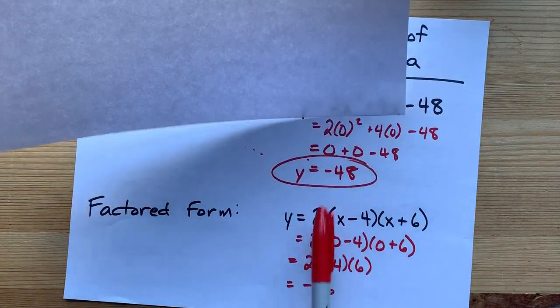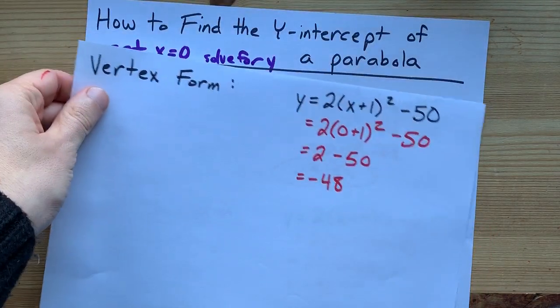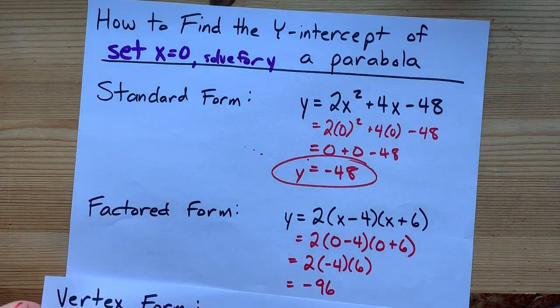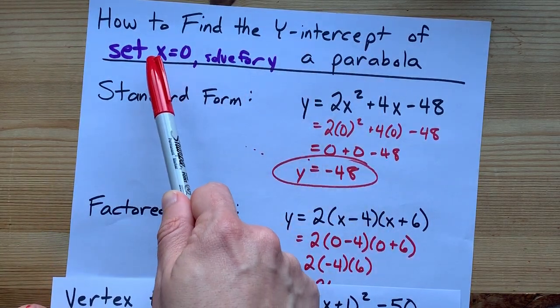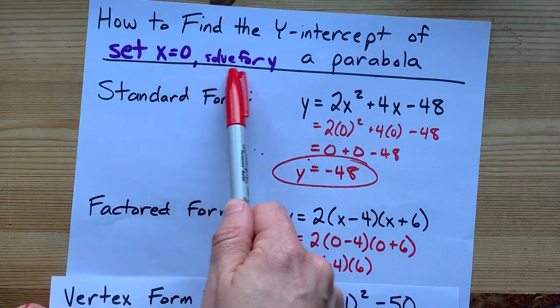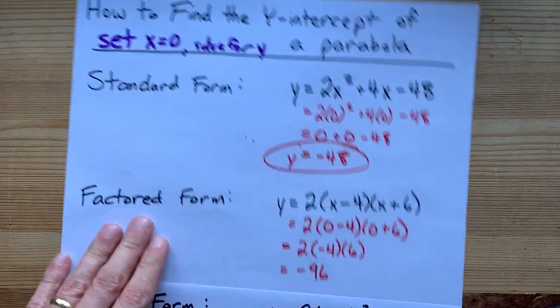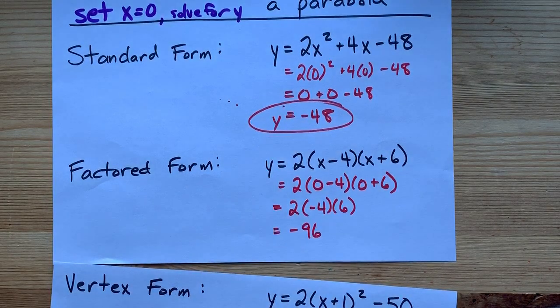And I meant to rig this one to be the same, but I must have made a mistake. Oh well. The point is, you find the y-intercept by replacing all of your x's with 0. Then you just do the calculations to get what y is. This one was negative 48.